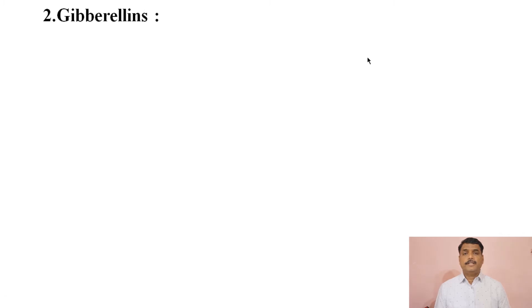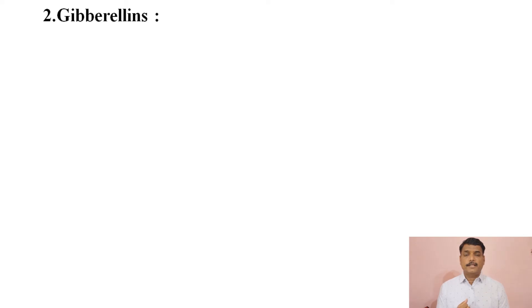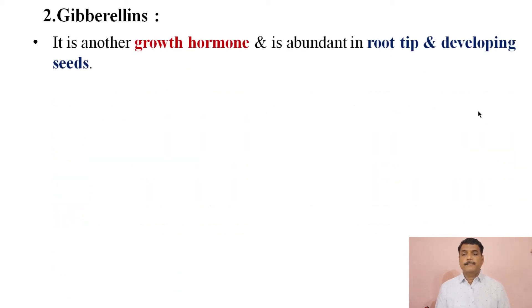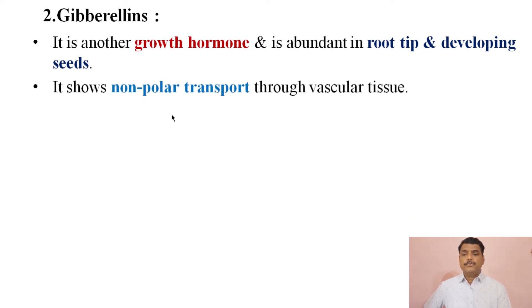In the last lecture we discussed the first type of growth hormone, auxins. In today's lecture we will discuss the second type of growth hormone, that is the gibberellins. These growth hormones are generally termed as growth promoters. Gibberellins are abundant in root tips and developing seeds, and they show non-polar transport through vascular tissue.